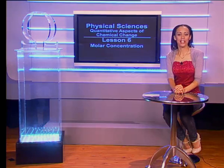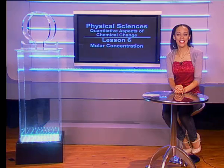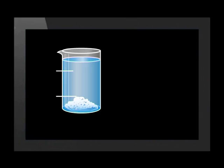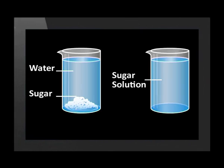A solution is a homogeneous mixture, meaning that the components making up the solution are all in a single phase, hence it is the same throughout. A solution is made of two or more substances that are mixed together. The substance in the largest amount is the solvent — in this case it is the water. The substance that dissolves in the solvent is called the solute. Here the solute is sugar, and the sugar dissolves in the water to form a sugar solution.